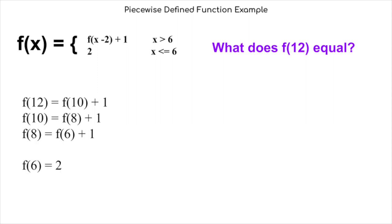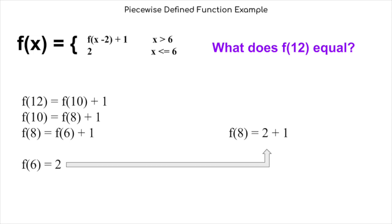When we check six, it cannot be simplified anymore, and we know that it equals two. Now we can start substituting. Because f of six equals two, we can plug it into the f of eight equation, and find that f of eight equals two plus one.